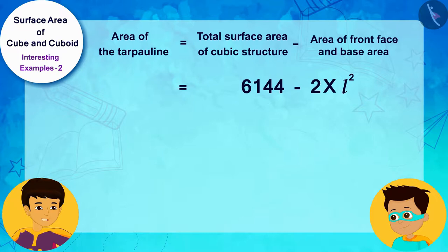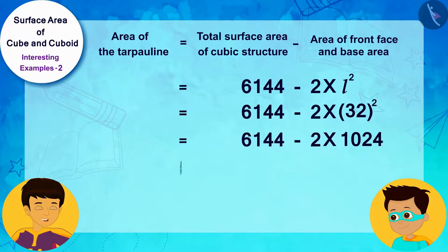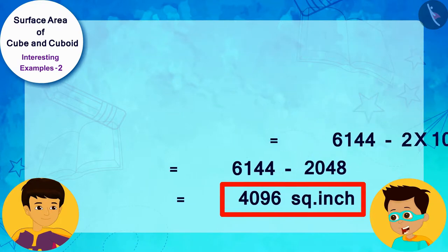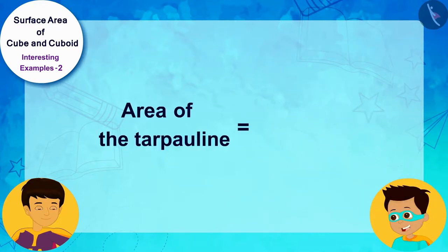The length of the sides of the structure is 32 inches. Let me solve it quickly by writing it here. Look, we got 4096 square inches of tarpaulin. Yes, did you see how easy it is?